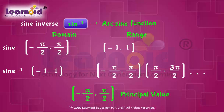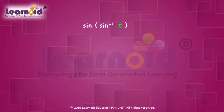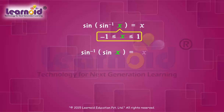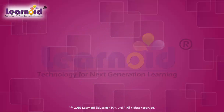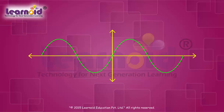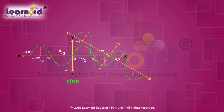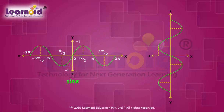From the definition of inverse function, sine of sine inverse(x) is equal to x if x is greater than or equal to minus 1 and less than or equal to 1. Similarly, sine inverse of sine(x) is equal to x where x is greater than or equal to minus pi by 2 and less than or equal to pi by 2. Or if sine y is equal to x, then y is equal to sine inverse x. The graph of the sine inverse function can be obtained by interchanging the x and y axes of the sine function.